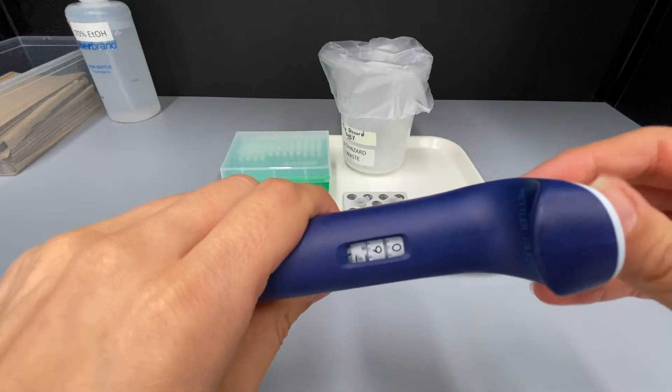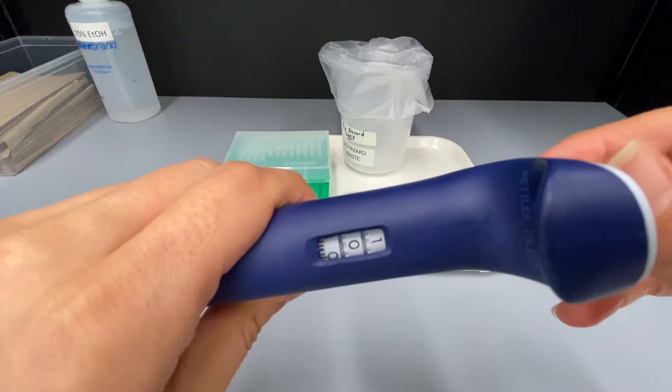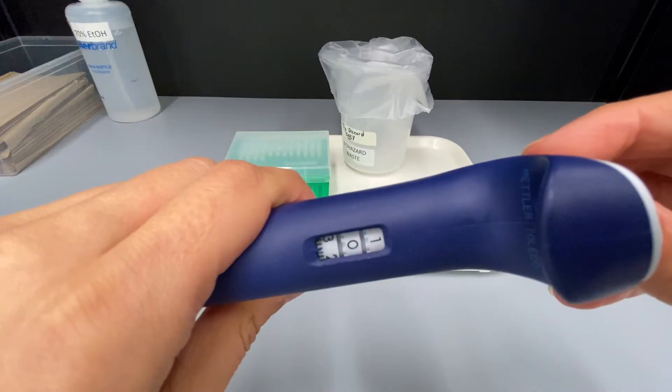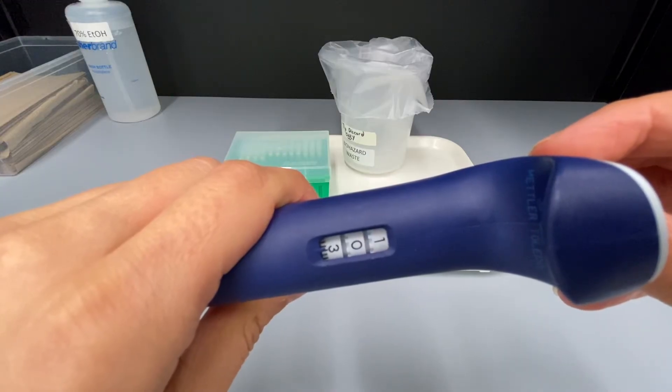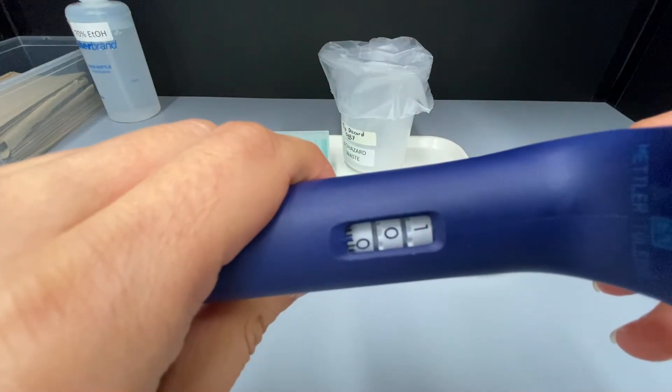When setting volume, it is recommended for accuracy to go past the volume required and then go back. So if the volume is not at 100, turn the volume adjustment knob until the volume reads 1, 0, 3 and then go back to 100.